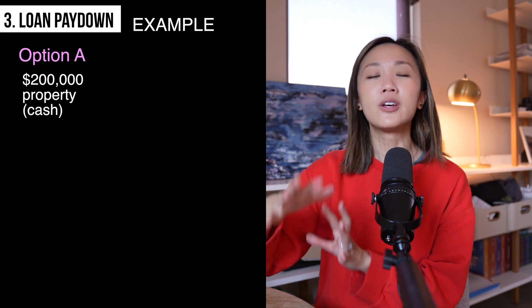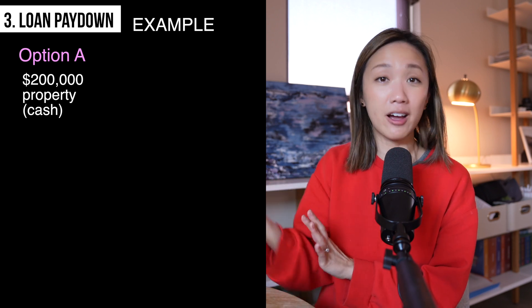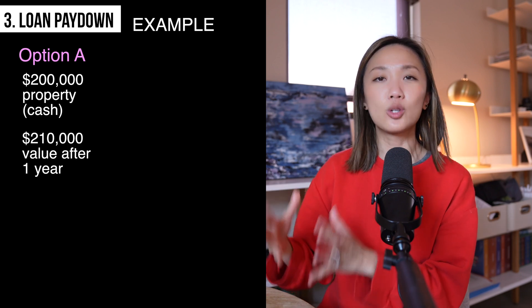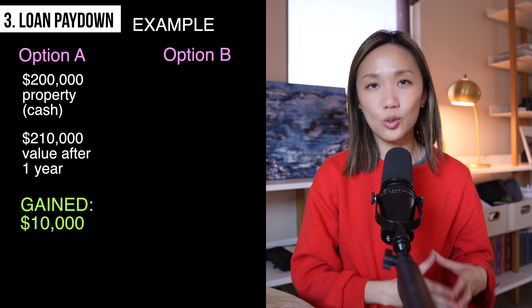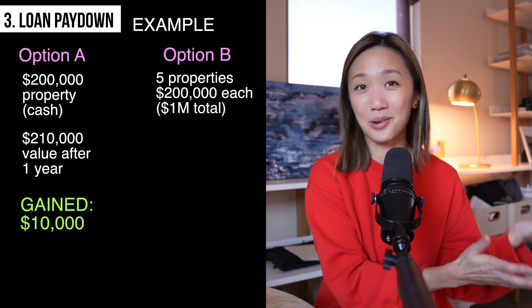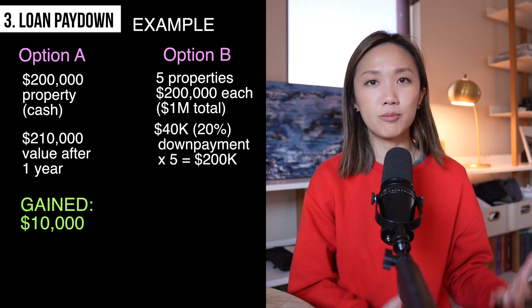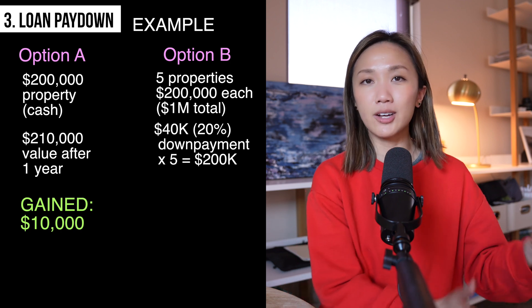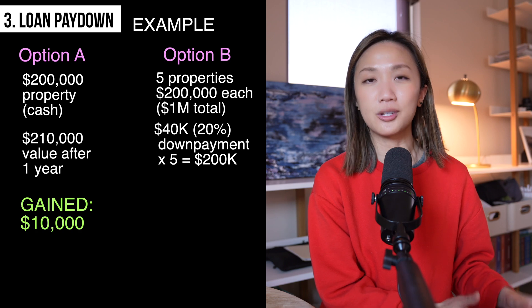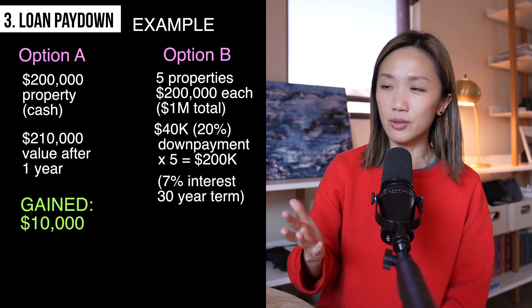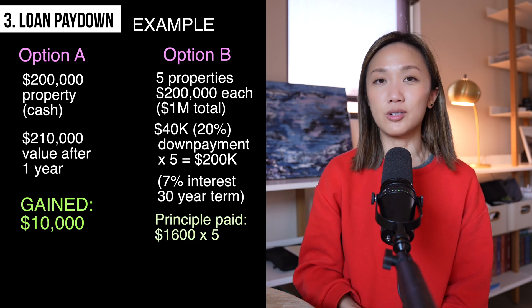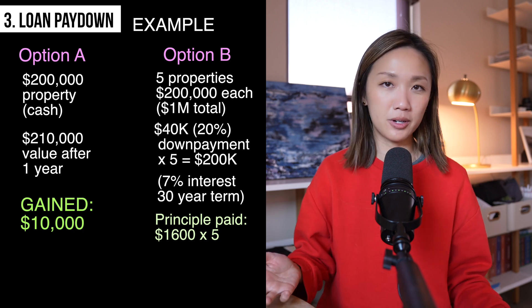Say if you had $200,000 to invest. Option A: you could buy a $200,000 property. A $200,000 property appreciating at 5% per year — in the next year, the same property would be worth $210,000, giving you a $10,000 gain in equity due to appreciation. Or in Option B, you could use the $200,000 to buy five properties worth $200,000 each, but you're only investing $40,000 per property, or a 20% down payment. The upfront investment cost is exactly the same $200,000, but now you've financed the rest at, say, a 7% loan on a 30-year term. Using a mortgage calculator, you can figure out that for each property you're paying down $1,600 of the principal during the first year. Across five properties, that is $8,000.